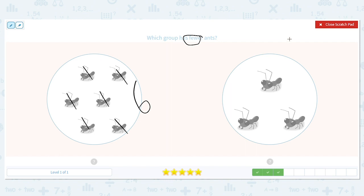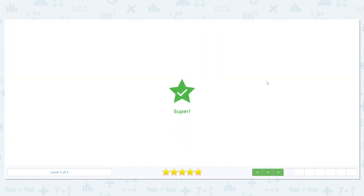How about on the other side? One, two, three. Which is fewer? Six or three? Three is fewer. So our answer is on the right.